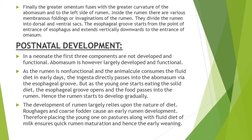The development of the rumen directly depends upon the nature of diet, and roughage and coarse fodder cause early rumen development. Therefore, placing the young one on pastures along with a fluid diet of milk ensures quick rumen maturation and hence early weaning of the young one. As long as the young one consumes only fluid diet its rumen is not developed, but when it starts eating solid diet the rumen develops.